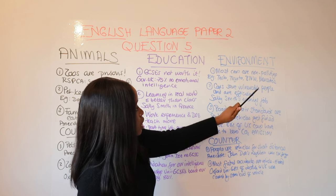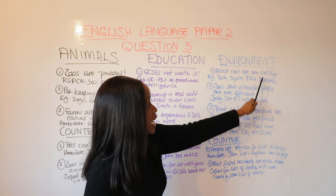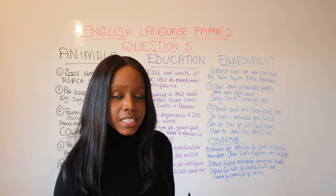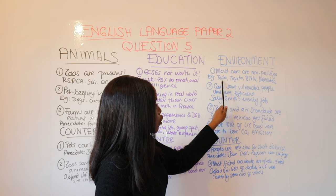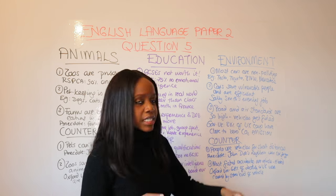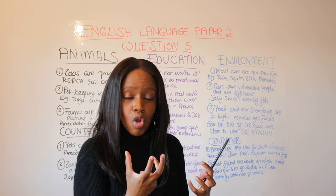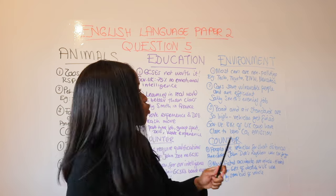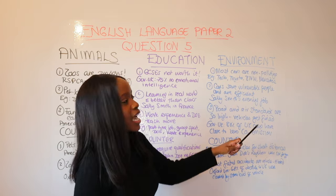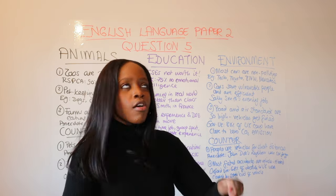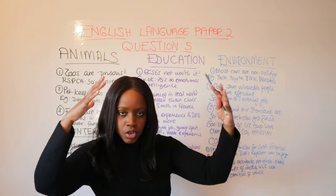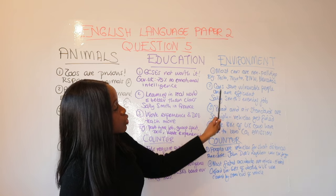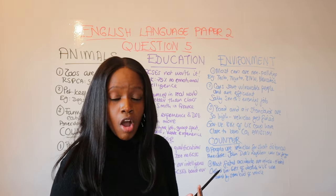The first point is that it would be wrong to ban cars or planes. Most cars today are very environmentally friendly and non-polluting. For example, Teslas, Toyota Priuses, BMWs and Mercedes all have electric cars which give off minimal pollution. Similarly, British Airways and Ryanair have started reducing their carbon emissions. It would therefore be a mistake to ban things like cars.